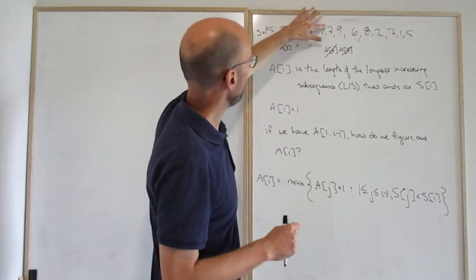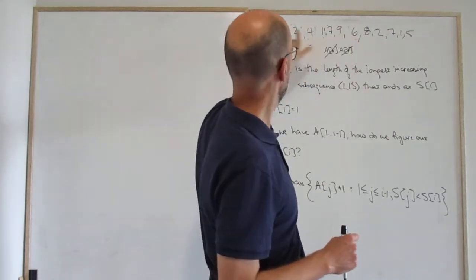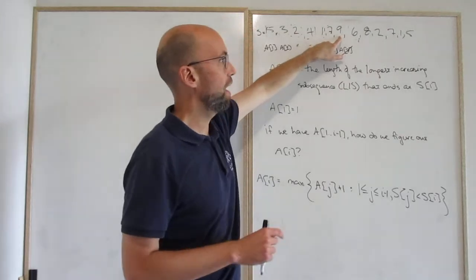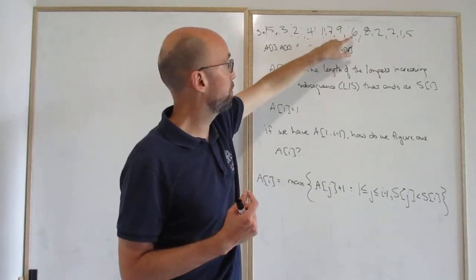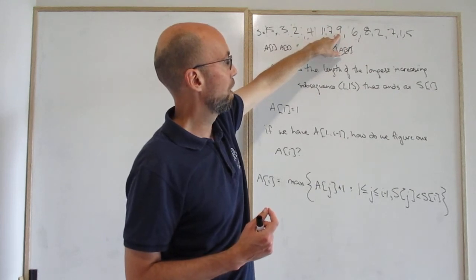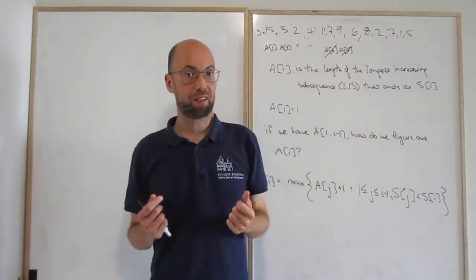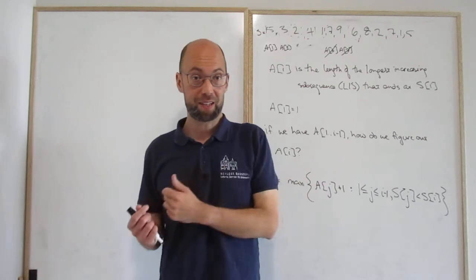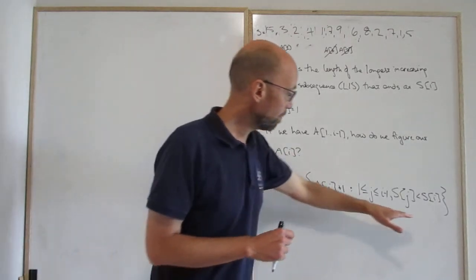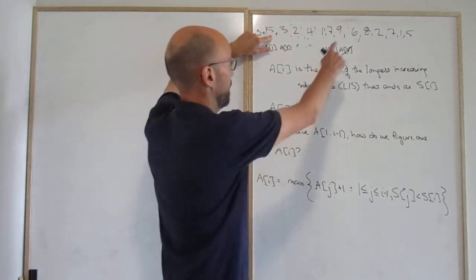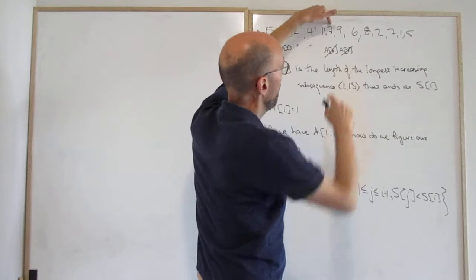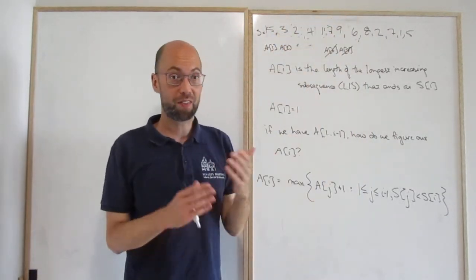When computing a_8, I don't care how big a_7 is because s_7 is bigger than s_8. I can have a really long subsequence ending with the nine, but that doesn't help me find a long subsequence ending with the six, because I can't append six to a subsequence ending with nine. I'm only interested in subsequences I can append six to — ending with 5, 3, 2, 4, or 1 — but not ending with 7.